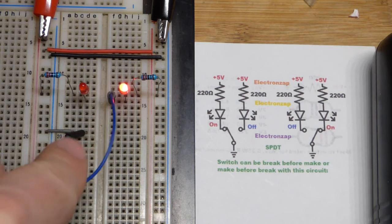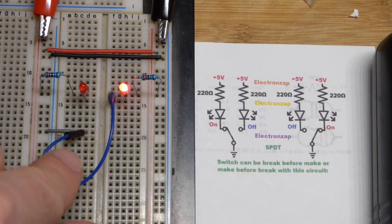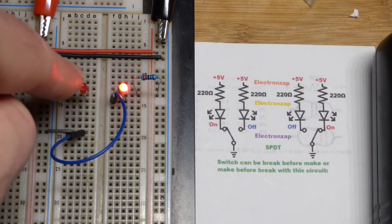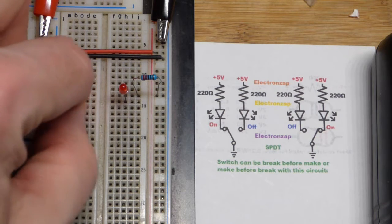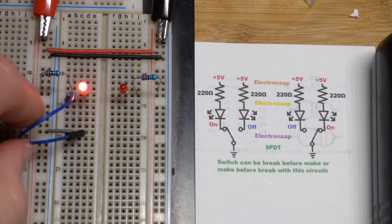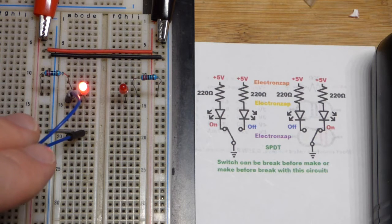What we have here would be called a break before make. So before I can light this LED that one is going to come off and this is basically what a mechanical switch is doing.